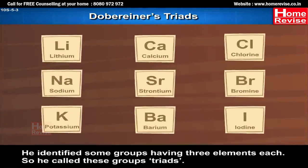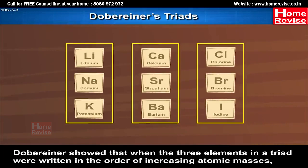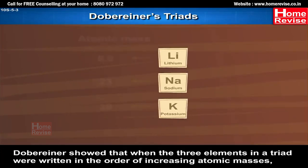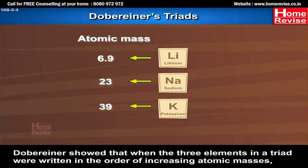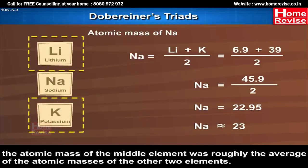Dobereiner's Triads: He identified some groups having three elements each, and called these groups triads. Dobereiner showed that when the three elements in a triad were written in the order of increasing atomic masses, the atomic mass of the middle element was roughly the average of the atomic masses of the other two elements.